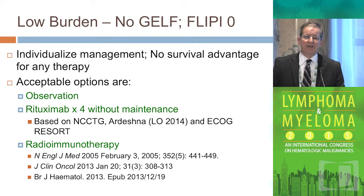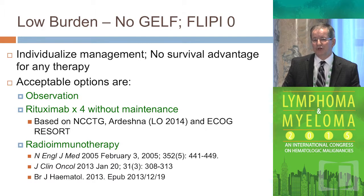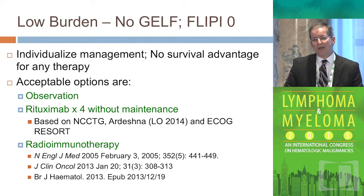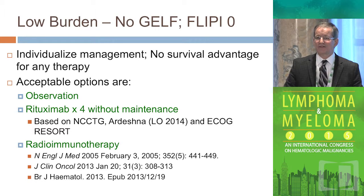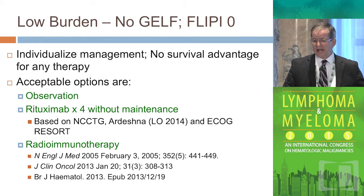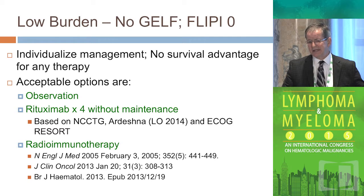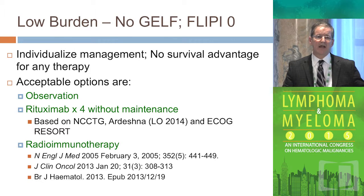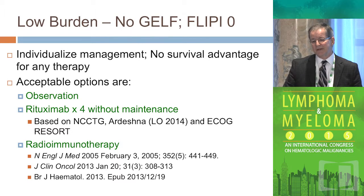If a patient has low tumor burden, you have three options. You can observe them, as Dr. Coleman discussed, without risking overall survival — sometimes called watch and wait, sometimes watch and worry, because some patients can't handle being told they have stage 4 cancer and not being treated. Several studies — the NCCD study, the Columbott study, the Ardeshna study, and the ECOG RESORT study — all show that rituximab times four doses without maintenance gives very high response rates of 75%, and some patients are 10 years out and have never relapsed.